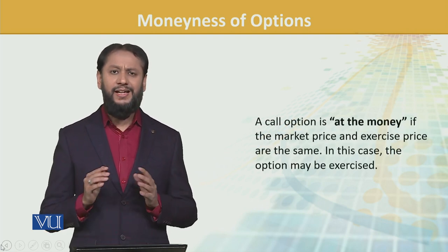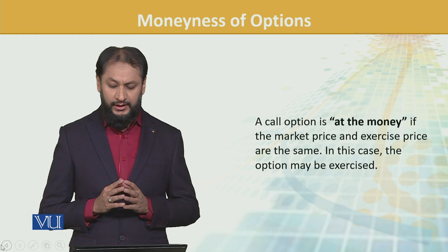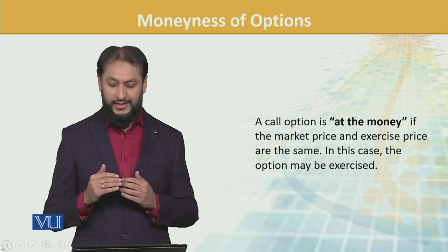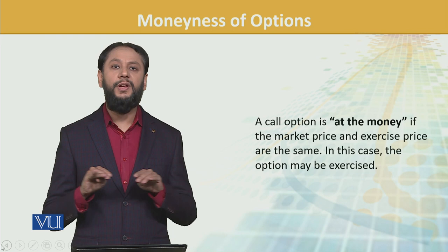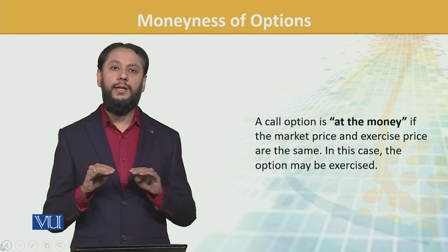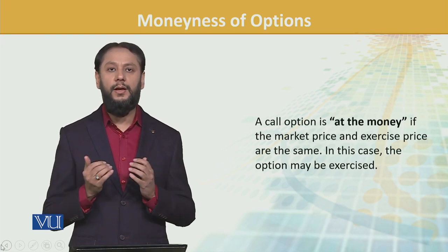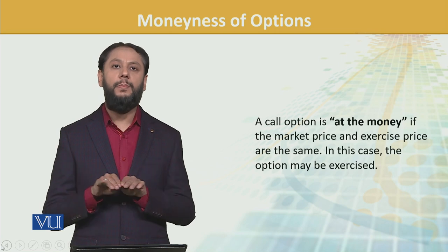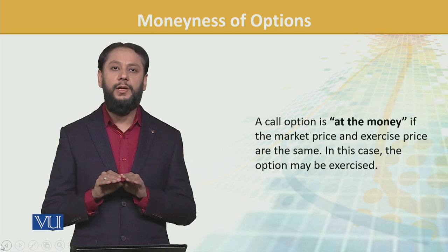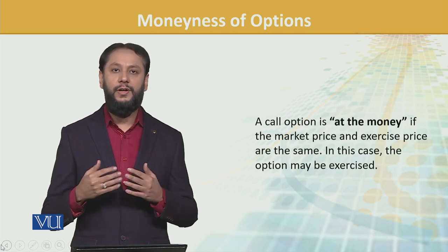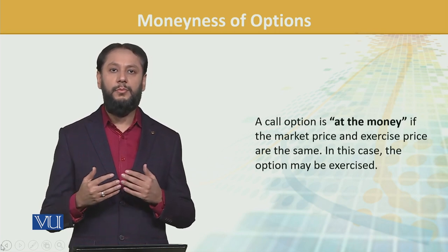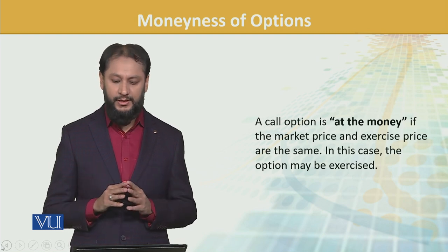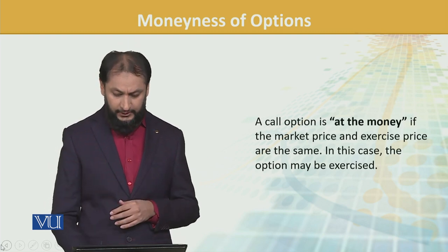An option is at the money if the market price and exercise price — or strike price — are equal. That is, they are exactly equal: your strike price is 100 and your market price is also 100. They are exactly at par. Now the time factor will be triggering in, but as at that time it is at the money.